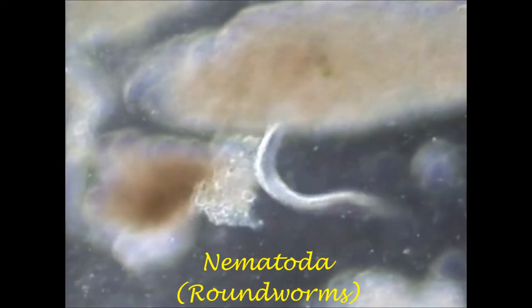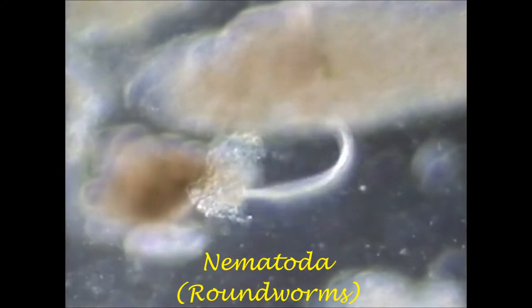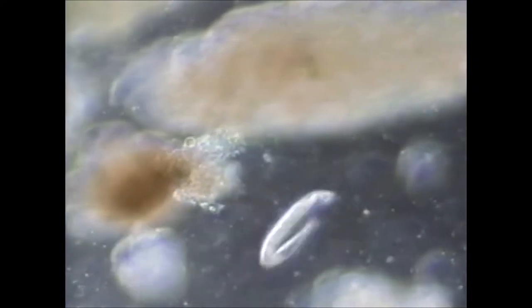Roundworms, Nematoda. Long, slender, snake-like body. The movement is whip-like.